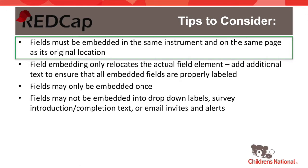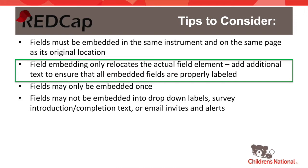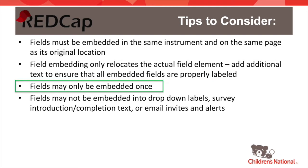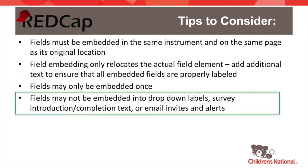Here are a few things to consider. You can embed a field in a field label, a field note, a multiple choice label, or in a section header. Wherever you decide to embed the field, its new location must be in the same instrument as its original location. If you are creating a survey with multiple pages, the field must also be embedded on the same page as the original location. When a field is embedded in a new location, the field label and field note do not appear on the form, so it's important to add additional text to ensure each embedded field is clearly and properly labeled. Fields can only be embedded once and cannot be embedded in two places at the same time. Fields cannot be embedded into dropdown labels, survey introduction or completion text, or in any outgoing email alerts or invitations.